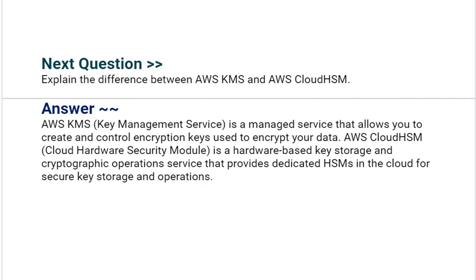Our next interview question is: explain the difference between AWS KMS and AWS CloudHSM. AWS KMS (Key Management Service) is a managed service that allows you to create and control encryption keys to encrypt your data. AWS CloudHSM (Cloud Hardware Security Module) is a hardware-based key storage and cryptographic operations service that provides dedicated HSMs in the cloud for secure key storage and operations.